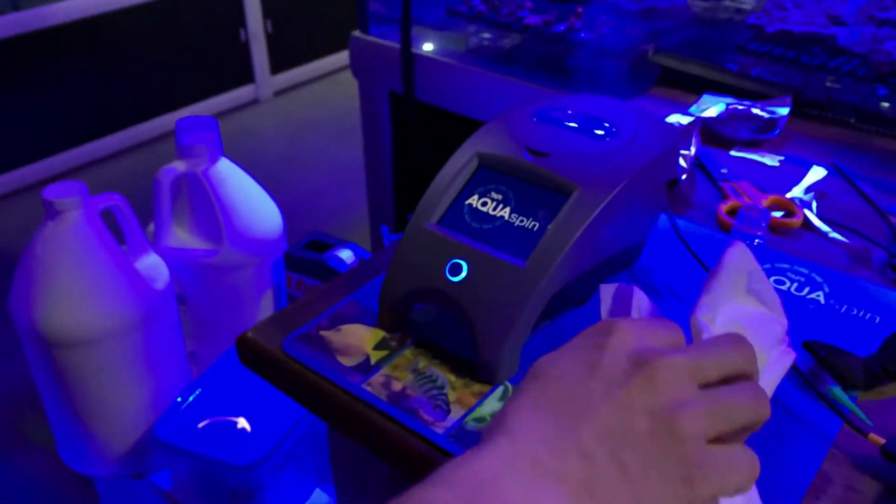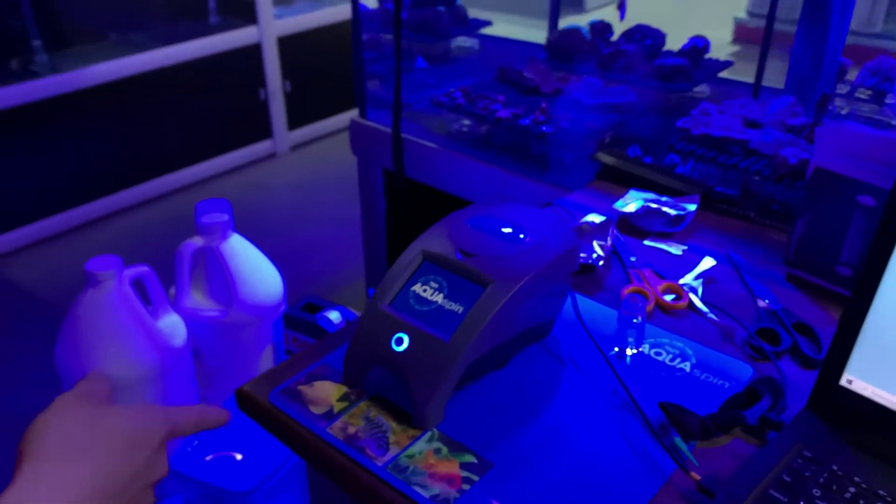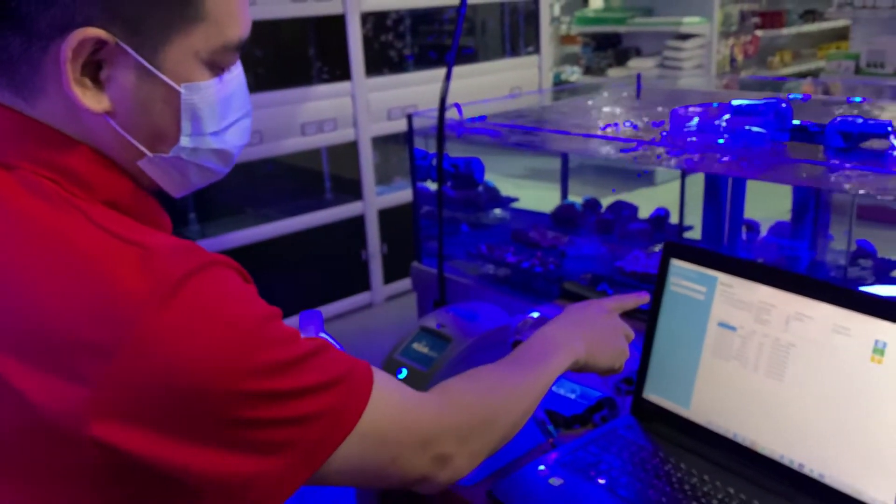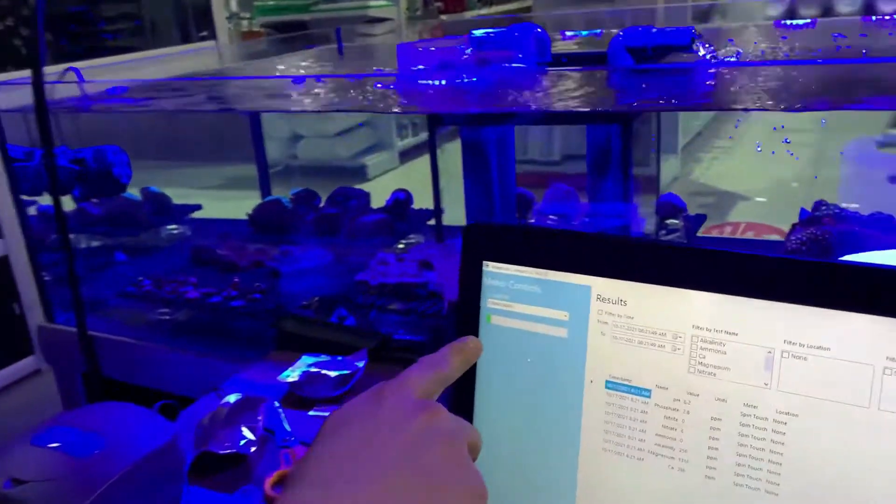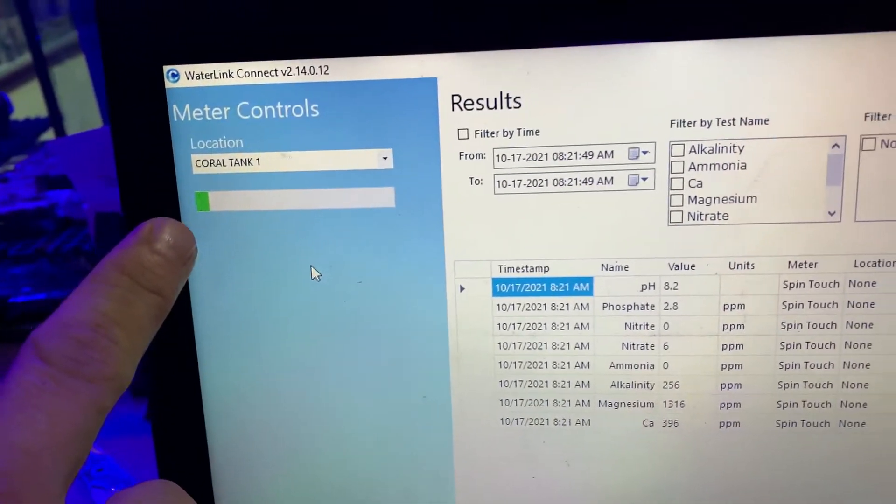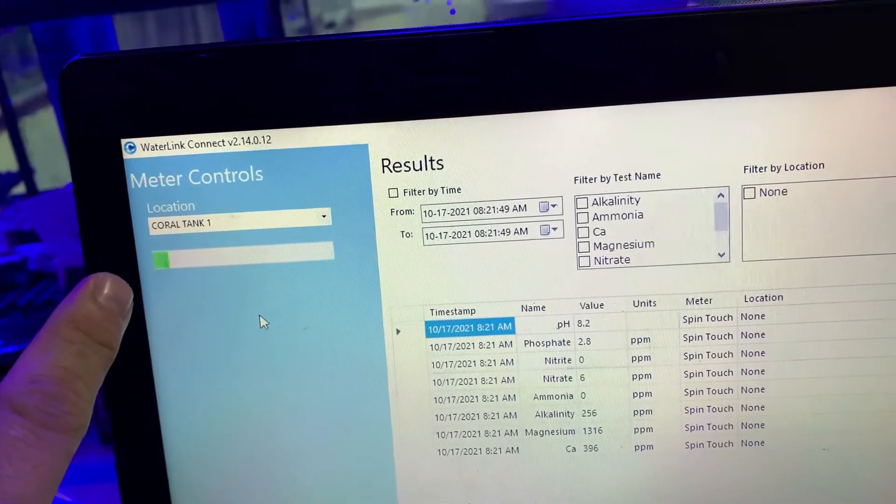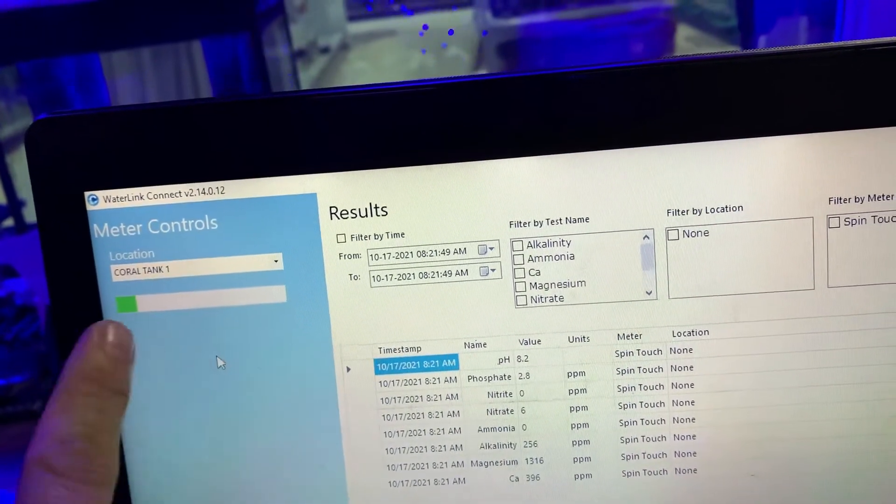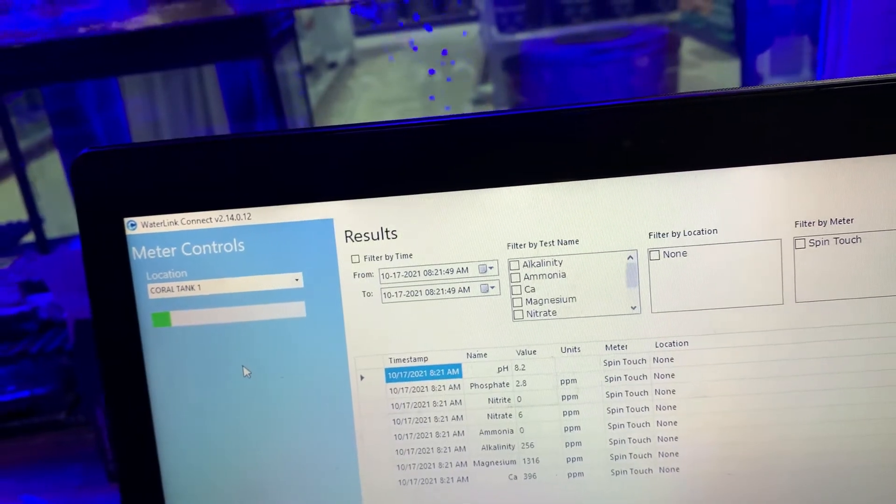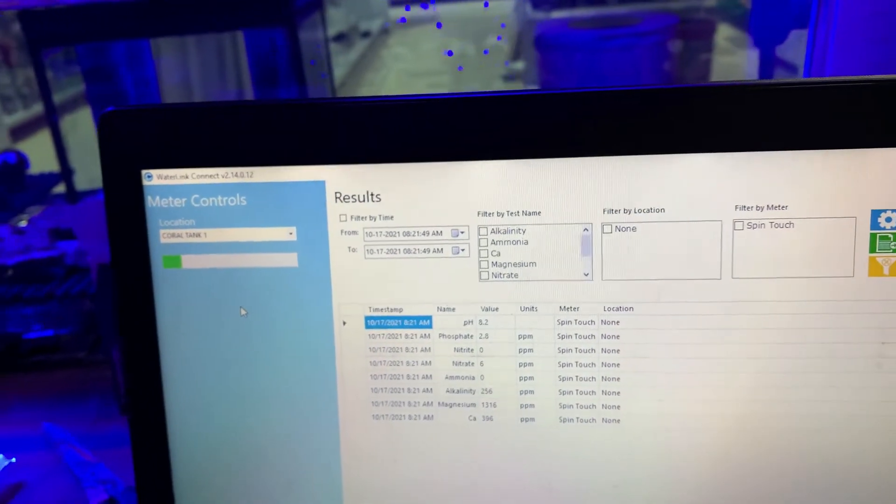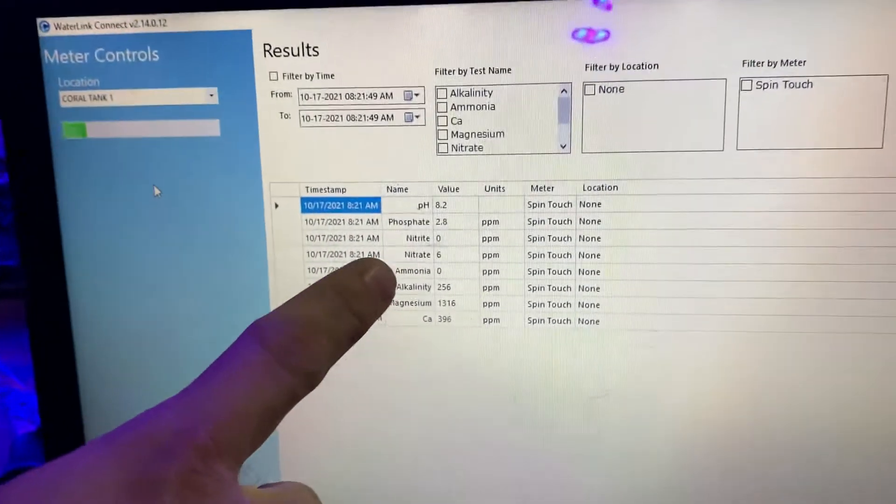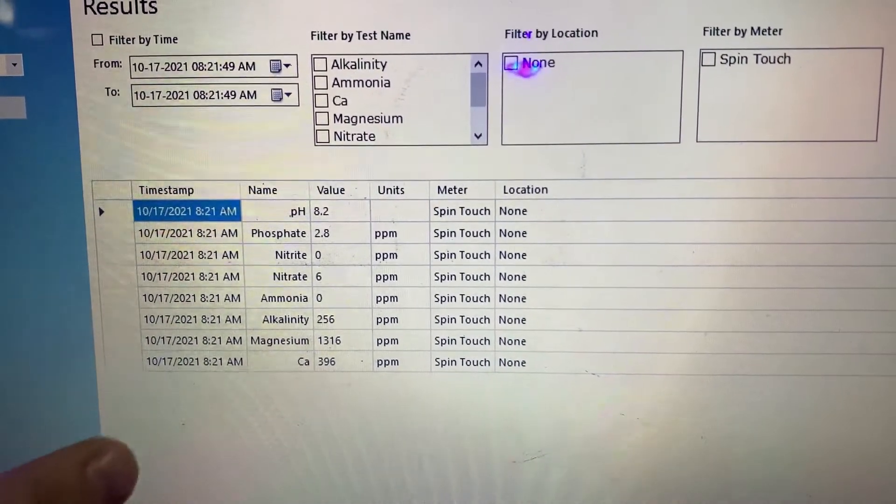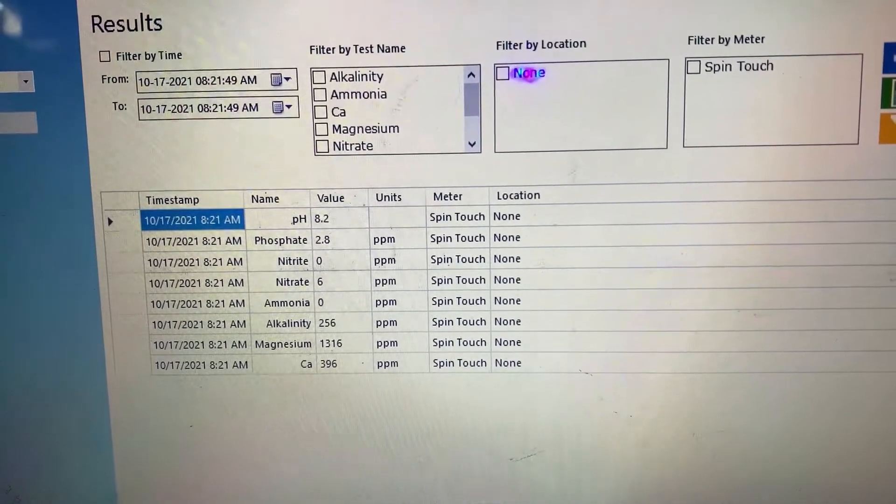It will start to blink. That means it's spinning now. As what you can see, this is the indicator. If this green color will fully fill this white area here, means it's finished testing the water. As what you can see, this is our previous test in the other tank. This is how it shows. This is how it's supposed to be presented.